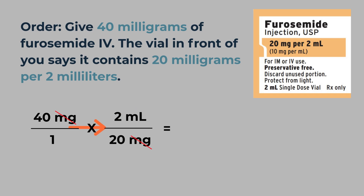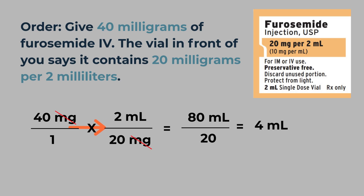Multiply across: 40 times 2 equals 80. 1 times 20 equals 20. Divide by the bottom: 80 divided by 20 equals 4 milliliters. That's your answer. You draw up and administer 4 milliliters.